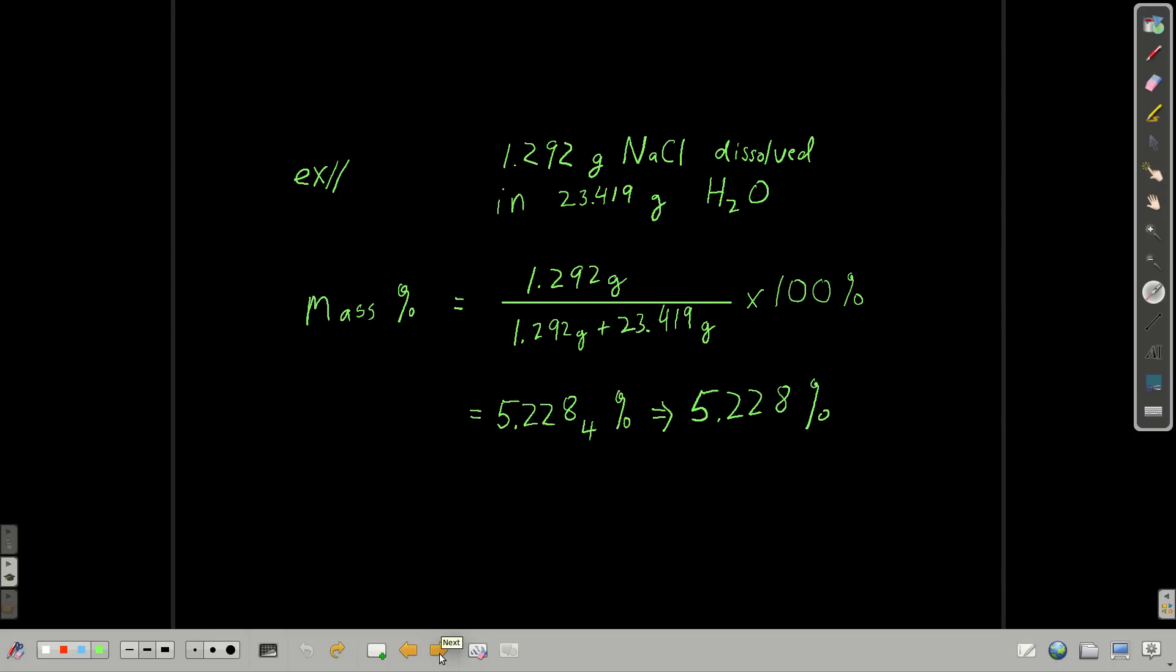So let's do a little example real quickly. Let's say you made a solution by dissolving 1.292 grams of sodium chloride in 23.49 grams of water. What is the mass percent of sodium chloride in that solution? Well, remember the definition is the mass of the solute divided by the mass of the solution. And just to remind you, solute is what's dissolved and the solvent is what it's being dissolved in. The solution is the solute plus the solvent.